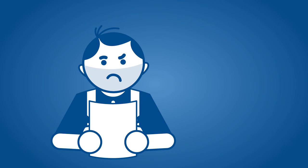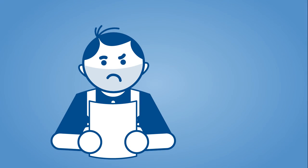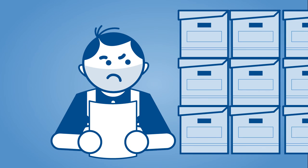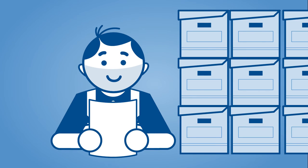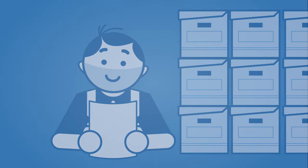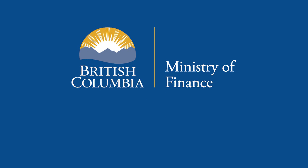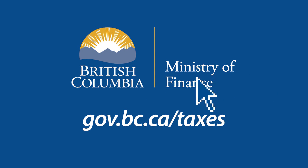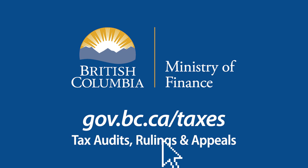If Curt examines his financial records after he's advised of owing taxes and discovers that he has already paid the tax, he can contact the Ministry, provide a copy of the new information, and ask for an adjustment to the assessment. Our website can help you find more information. Go to gov.bc.ca/taxes and click on Tax Audits, Rulings and Appeals.